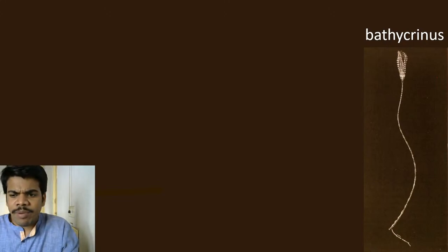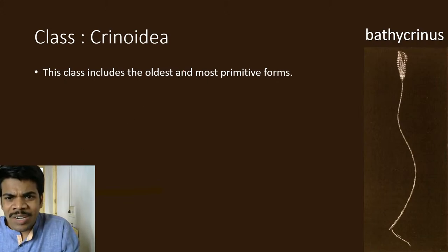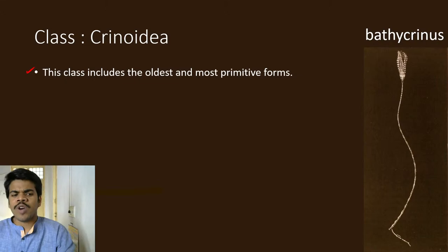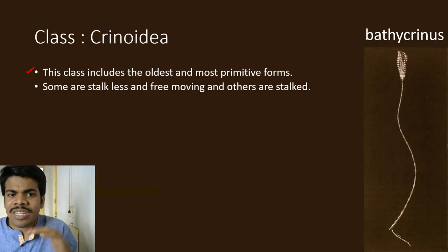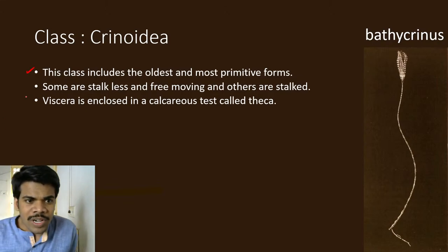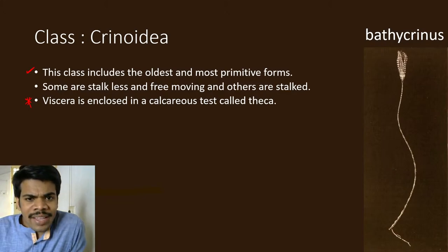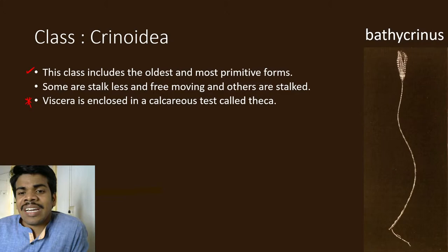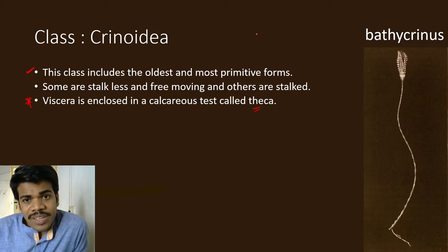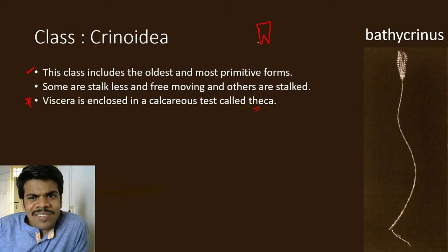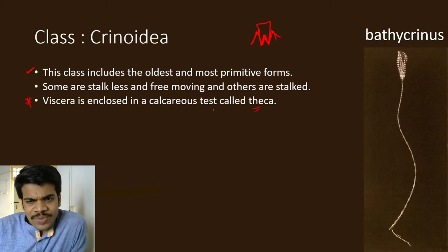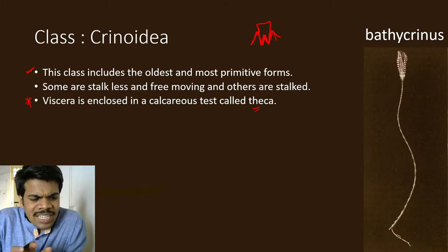Bathycrinus is the best example of a sea lily. The class includes the oldest and most primitive forms. Some are stockless and free-moving; others are stalked. Viscera is enclosed by a calcareous test called a theca. We already learned the word theca in dentition — thecodont teeth are embedded in the sockets of the jawbone, which is like a theca. Theca means a covering, and here the calcareous test covers the body.